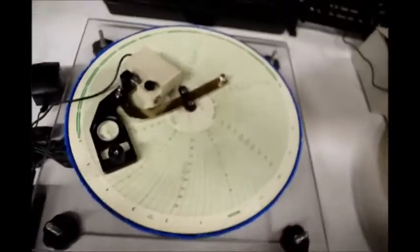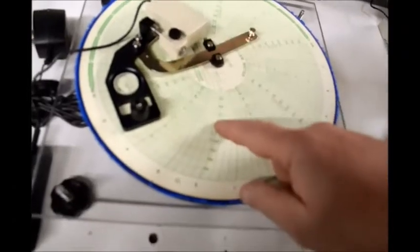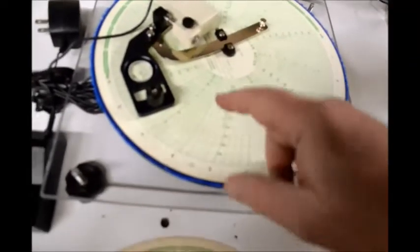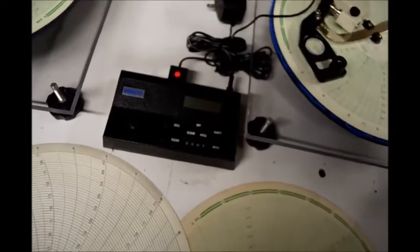The next progression in this type of device is the electronic model which has an encoder inside which still gives you a count. The count is read on this display and the display is plugged into the formula and gives you the same result.